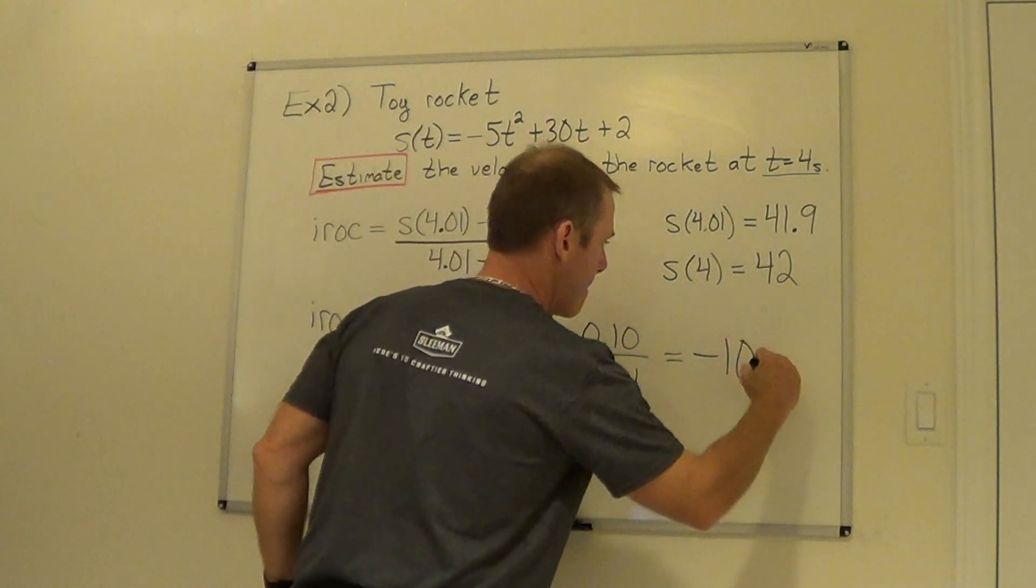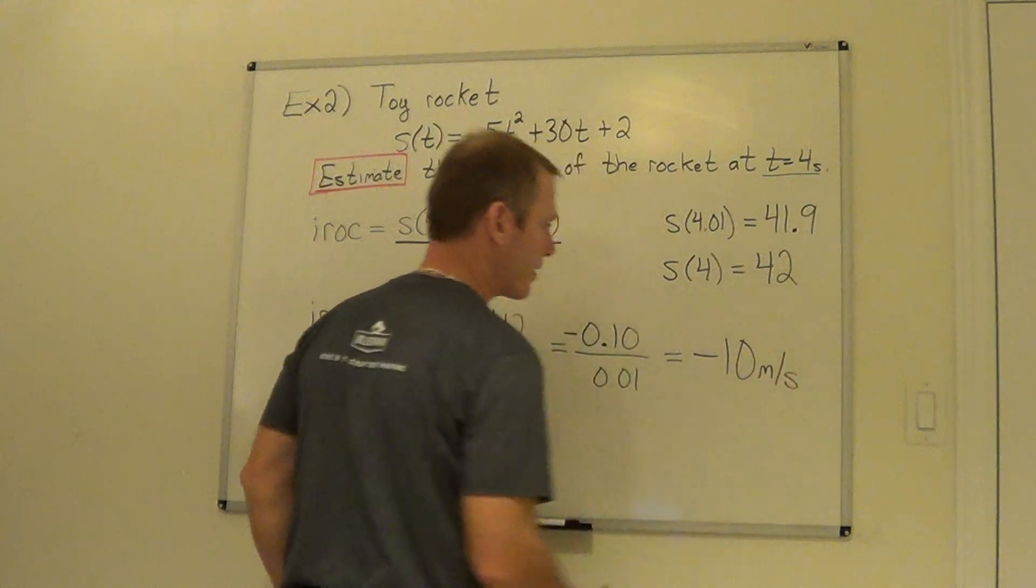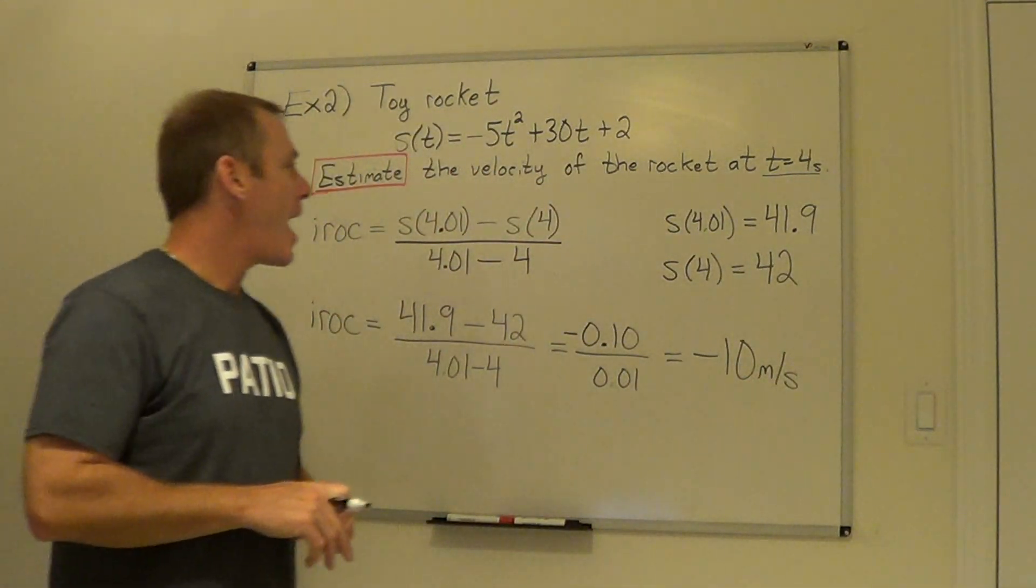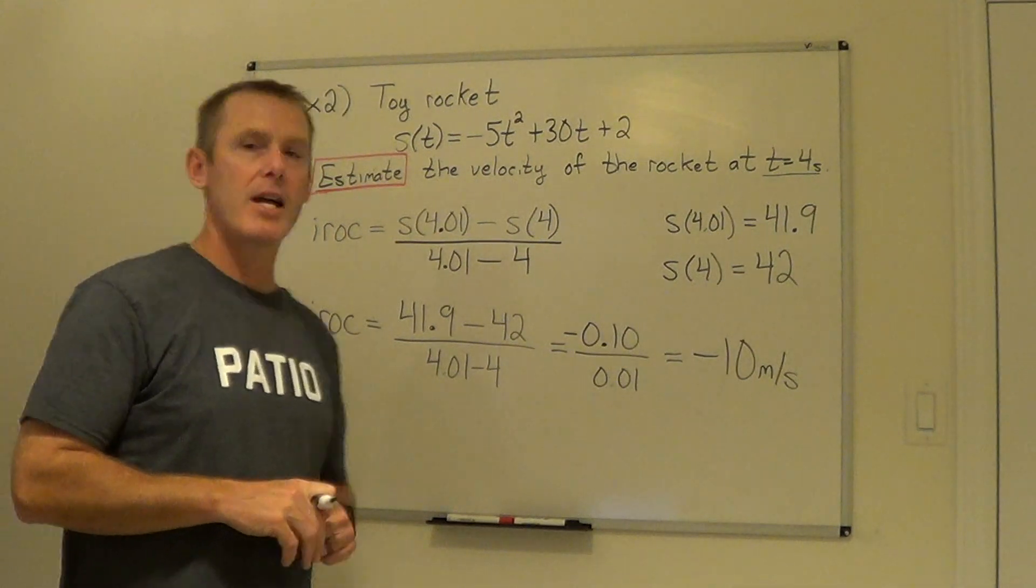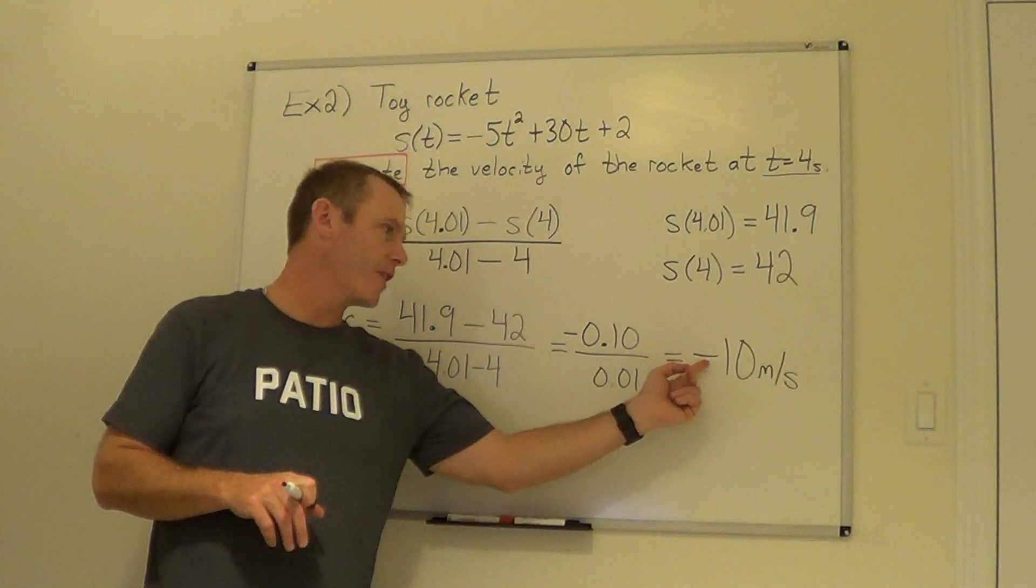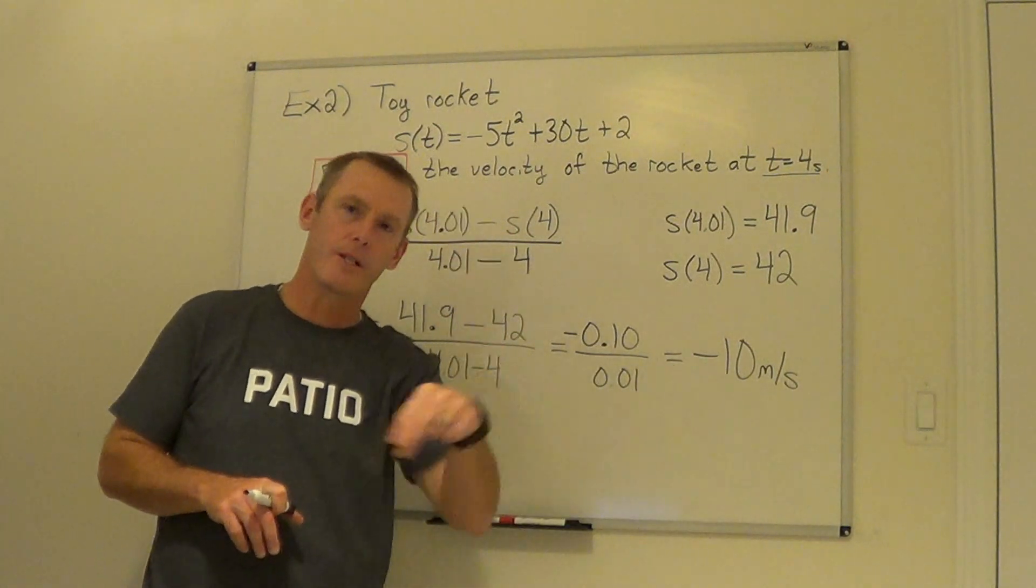The units were meters for height, seconds for time, and that would mean in this case that the pebble at 4 seconds, I would estimate that the velocity would be 10 meters per second. If you ever take physics, the minus sign means it's headed downwards.